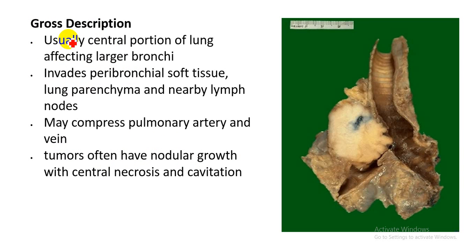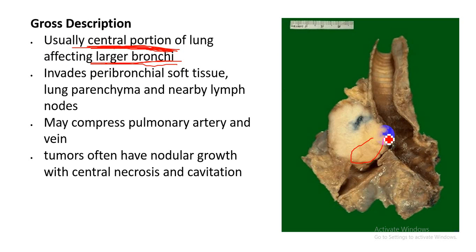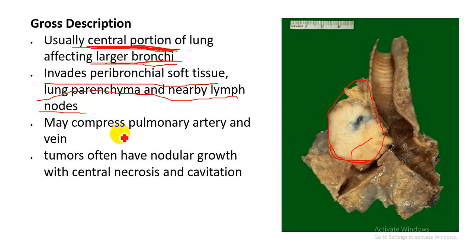Now let's talk about the gross description. Squamous cell carcinoma usually arises from the central portion of the lung, affecting the larger bronchi. You can see the tumor arising from the central portion of the lung — this is the point of bifurcation of the trachea, the right bronchus and the left bronchus. The tumor mass arises from the primary bronchi and extends toward the peribronchial tissue, invading the peribronchial soft tissue, lung parenchyma, and nearby lymph nodes. Sometimes it may also compress the pulmonary artery and pulmonary vein.